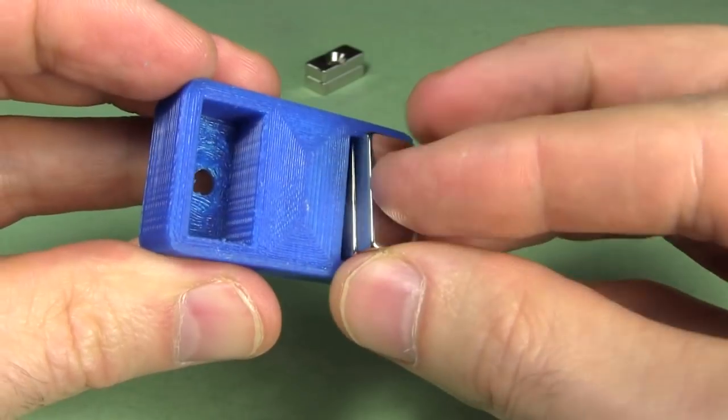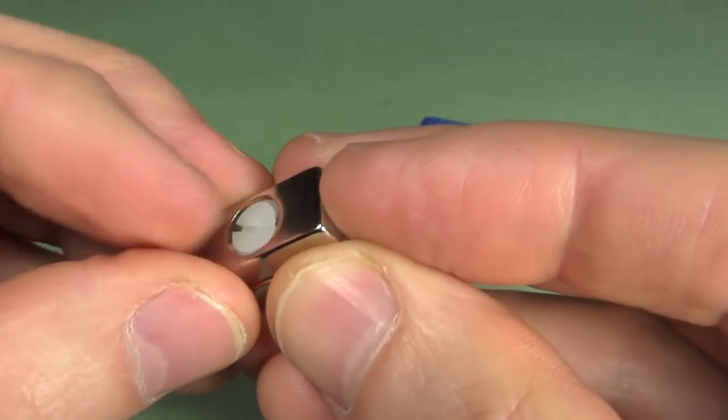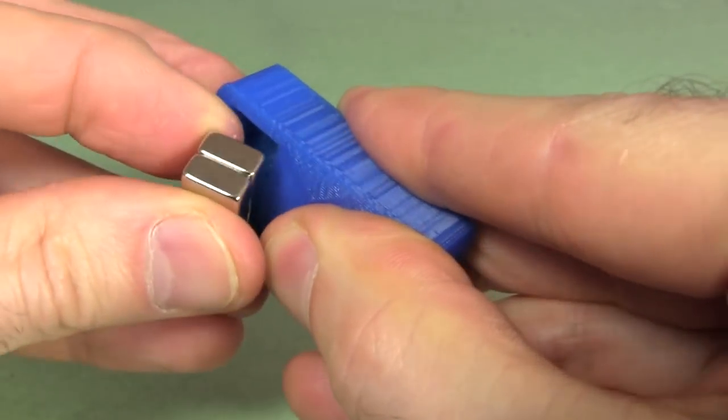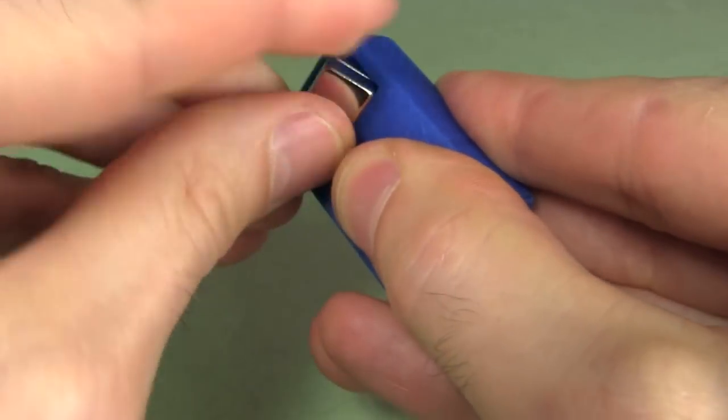Two magnets go in each hole, so you'll need four in total, but buy extra ones in case you break some. Note how I keep my thumb over the magnets that are already in place, in case they try to slam into each other.